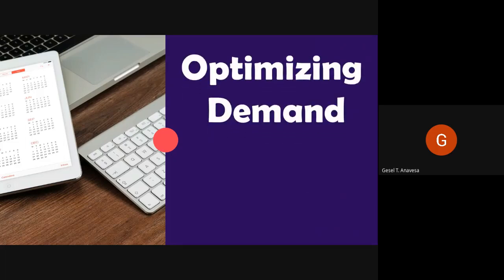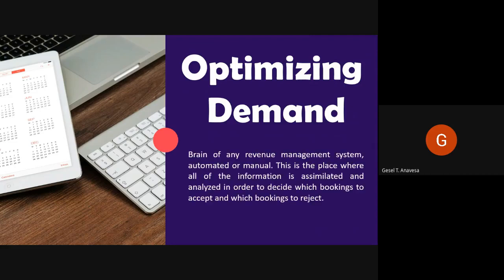Let's proceed to optimizing demand. Once you have a forecast, you can determine on which days it is likely that you will have to turn down demand. If you are able to do some basic unconstraining using the techniques already discussed, you can then decide which element of demand you should accept to maximize occupancy and rate. Filling the hotel on busy nights is obviously important; however, if you make optimal use of the demand you are forecasting, you should also be able to affect occupancy on shoulder nights by tactically deploying length-of-stay control.